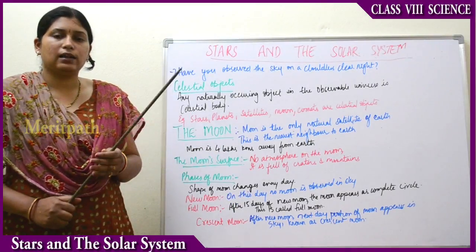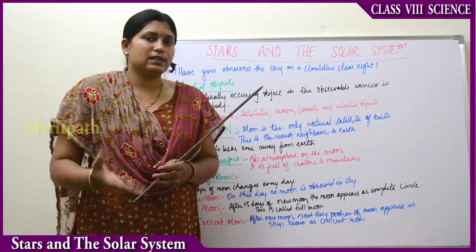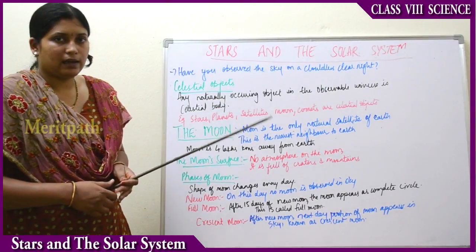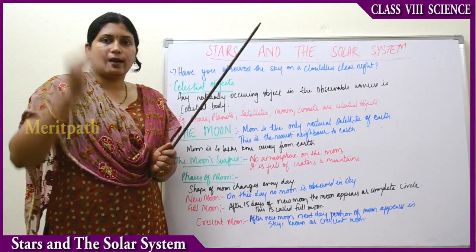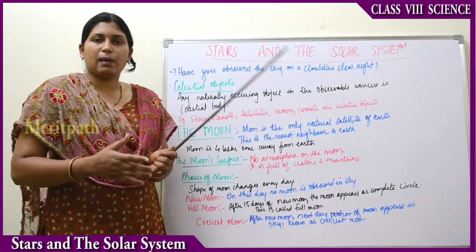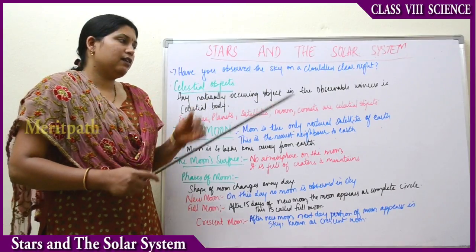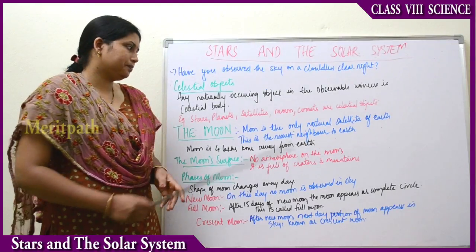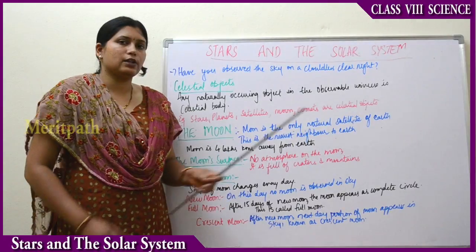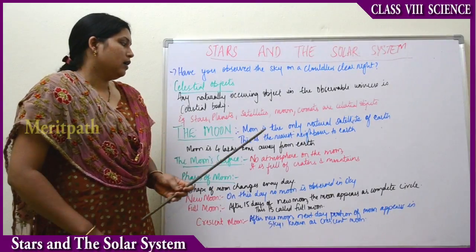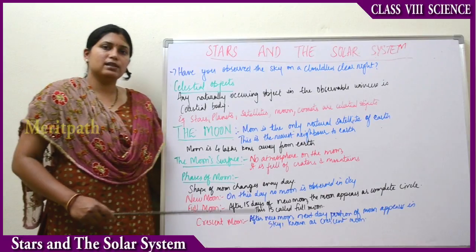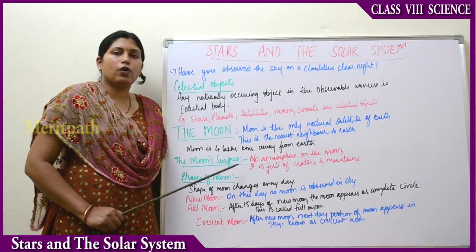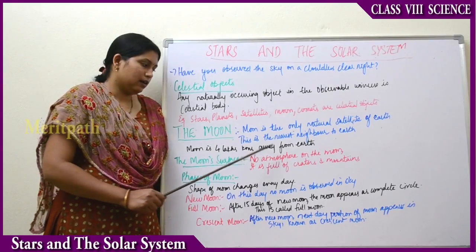Moon is the only natural satellite of the Earth. As soon as the sun sets, we start seeing the moon, which gives us light during the night time. However, this is not the moon's own light — the sunlight which falls on the moon reflects back, and that is how we are able to see the moon. The moon is the nearest neighbor to Earth, approximately 4 lakh kilometres away.